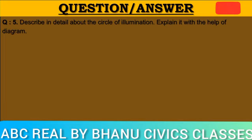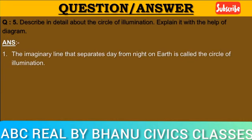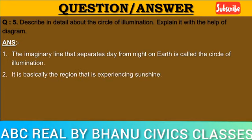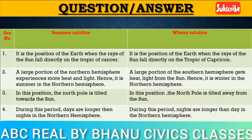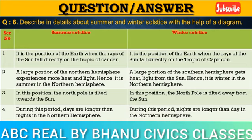Question number five: Describe in detail about the circle of illumination, with the help of a diagram. Answer: The imaginary line that separates day from night on earth is called the circle of illumination. It is basically the boundary of the region that is experiencing sunshine. This circle does not coincide with the axis.